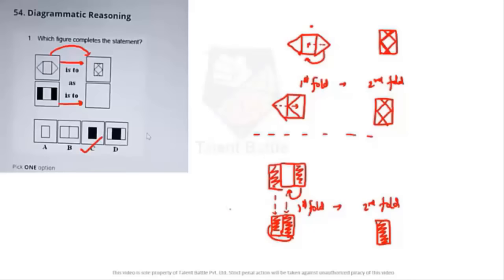That is the answer — a fully shaded rectangle. I hope you understood. Let us answer one more question on the diagrammatic reasoning part.